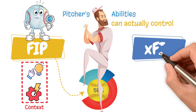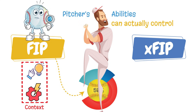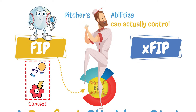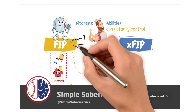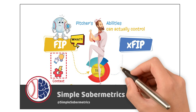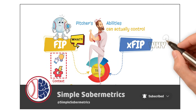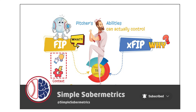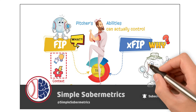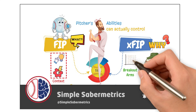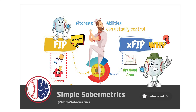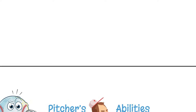That's where a stat like XFIP comes in. In today's video, we'll break down what FIP really tells you, why XFIP matters just as much, and how using them together can help you spot breakout arms or regression candidates.